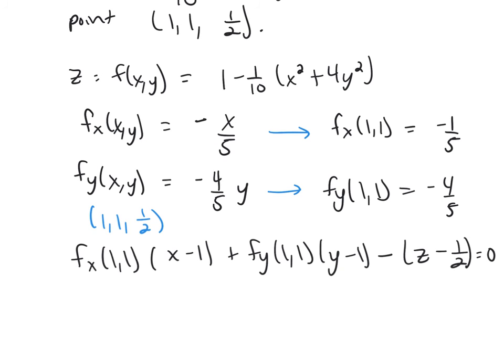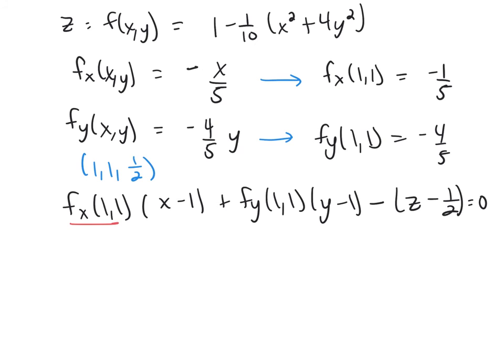...times (y minus 1), and then it was minus (z minus 1/2) equals 0. And then I just plug in what these things were from up above - it was negative 1/5 and negative 4/5.